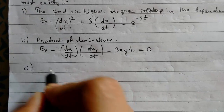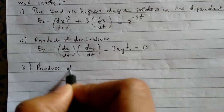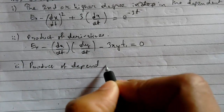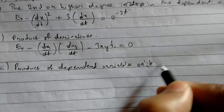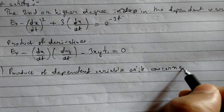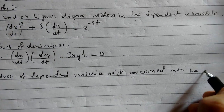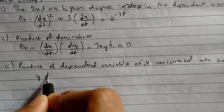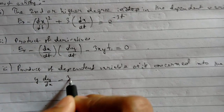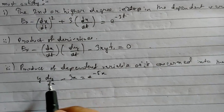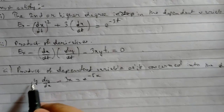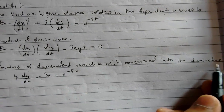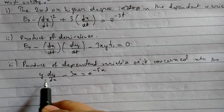Condition three: product of the dependent variable with its derivative. For example, y times dy/dx plus 3x equals f. Here y is the dependent variable, and it is multiplied with its own derivative. So there is a product of the dependent variable with its derivative.